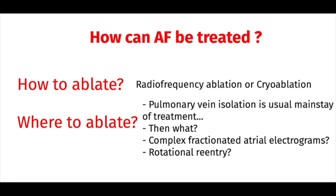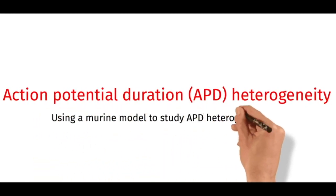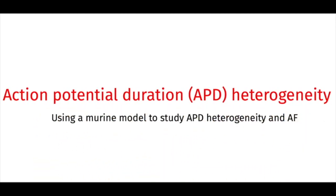However, sometimes AF can still occur after the isolation of the pulmonary veins, and it has been controversial about what to do next. Some studies have suggested that ablation of complex fractionated atrial electrograms or areas of rotational reentry may have added usage. Here in this paper, we present data that areas of action potential duration heterogeneity are hotbeds for reentry in a mouse model of atrial fibrillation.